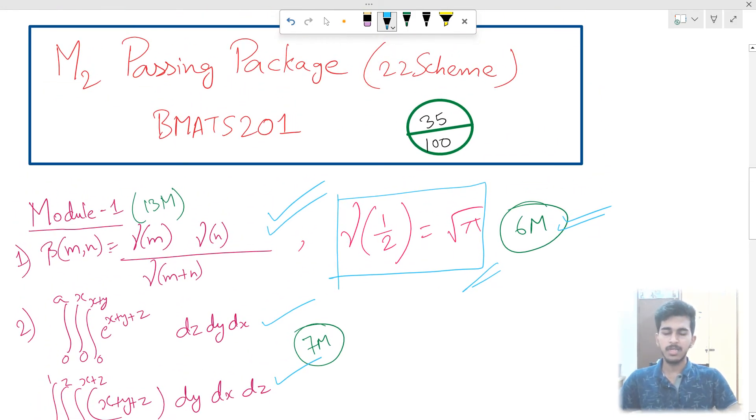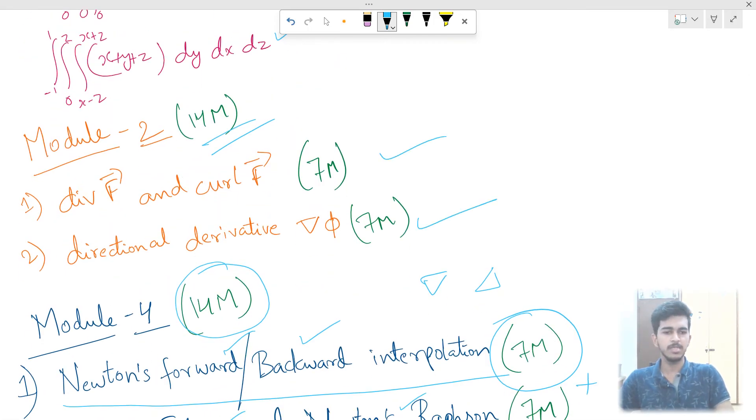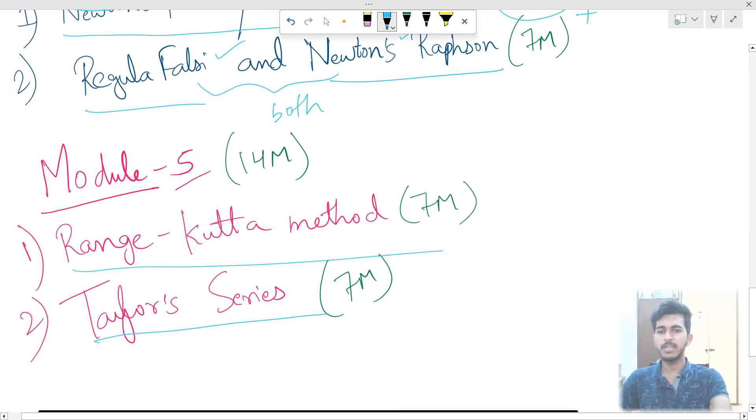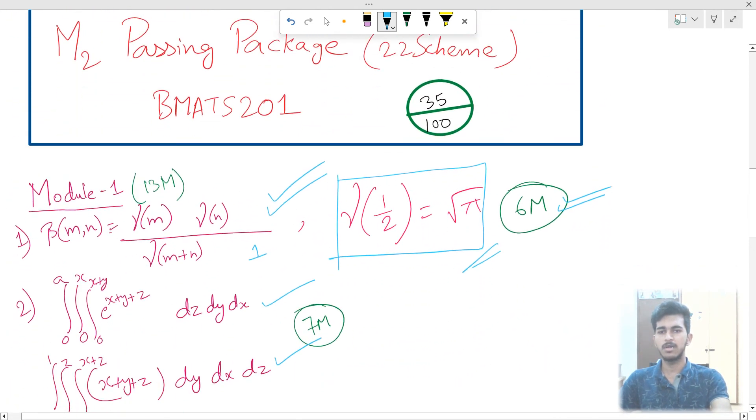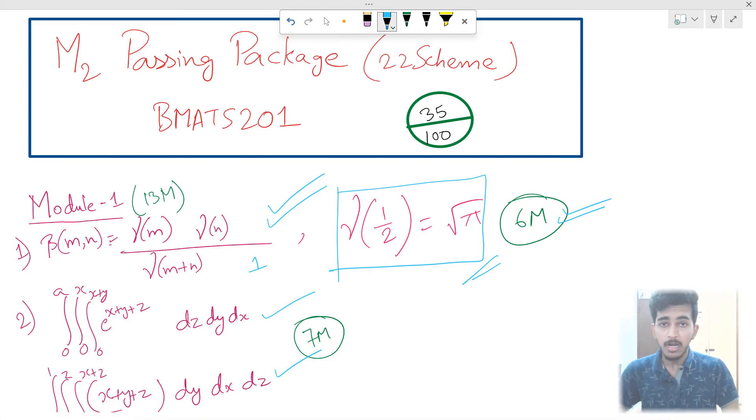So I am passing package. First, BM,n derivation can be first. Then preference is integration. Either no more. Either easy questions. Two problems, all money. Then Newton's forward backward interpolation is the most easiest model. Next model finally, RK method with Taylor series. Integration last year. Either passing package. Not ready.